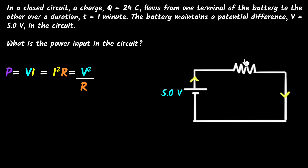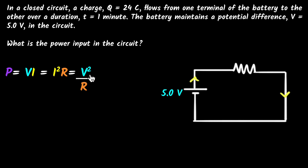Similarly, if you multiply the voltage across the resistor with the current through the resistor, you get how much power is dissipated in the resistor. Because of Ohm's law for resistors, you can also write power dissipated as I squared R or V squared over R. It comes from here — if you apply Ohm's law, you get this.